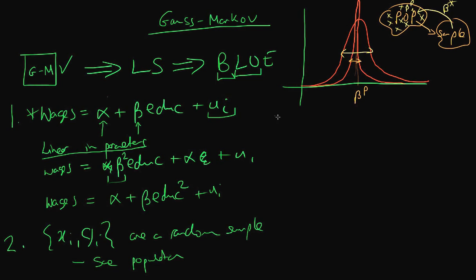The third condition is perhaps the most important of the Gauss-Markov conditions which is the zero conditional mean of errors.